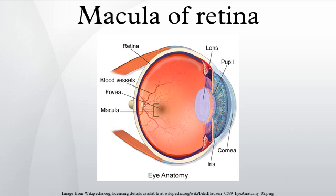Structure and color: because the macula is yellow in color, it absorbs excess blue and ultraviolet light that enter the eye, and acts as a natural sunblock for this area of the retina. The yellow color comes from its content of lutein and zeaxanthin, which are yellow xanthophyll carotenoids derived from the diet. Zeaxanthin predominates at the macula, while lutein predominates elsewhere in the retina.